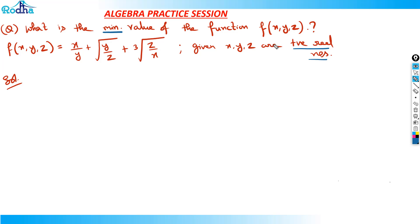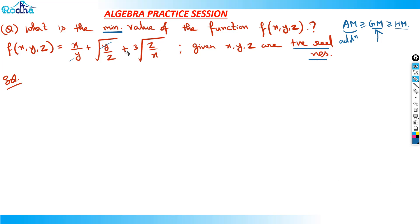As I've told you multiple times, once you see minimum or maximum and the variables are positive real numbers, you can always relate to AM-GM. For all positive real numbers, the arithmetic mean is greater than or equal to the geometric mean, which is greater than or equal to the harmonic mean. Here, since we're adding terms, AM is what we need. Between GM and HM, I'll apply GM because in GM these three terms get multiplied, and we can cancel y, z terms accordingly. So applying AM-GM will be a good approach here.